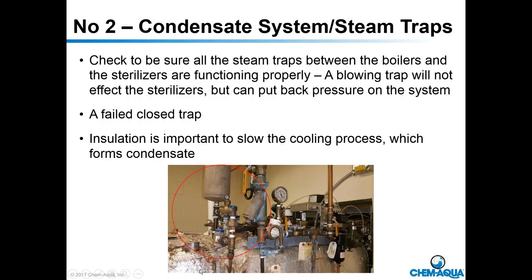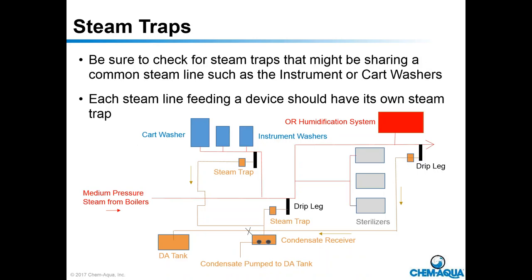On the sterilizers, you can see where the insulation is poor all the way around it — and further down where it's been removed. You may find a cool spot with moisture in that area because it's exposed and cools quicker. You might need to get the drawings out to trace where the steam pressure and steam lines are going, and where condensate lines are coming back. Steam traps must work properly ahead of the sterilizers to get the water out.